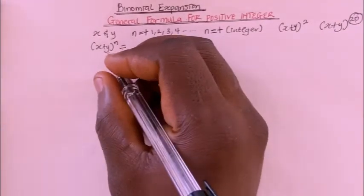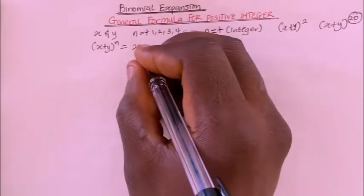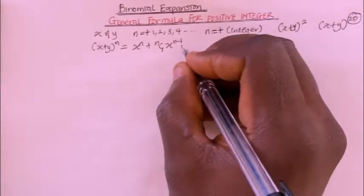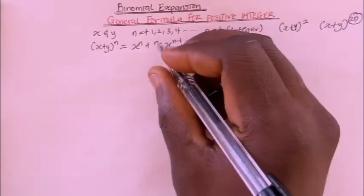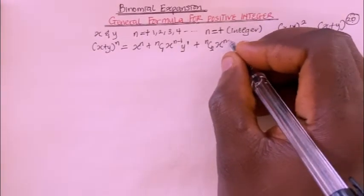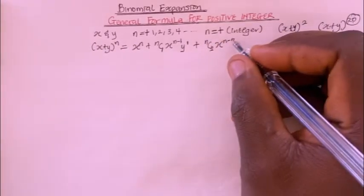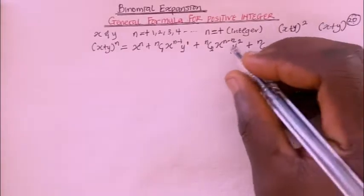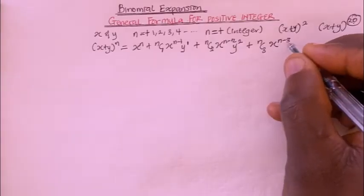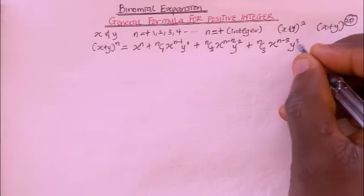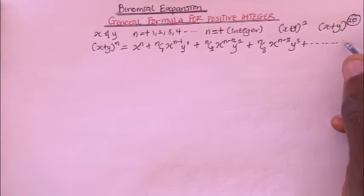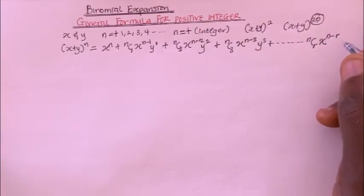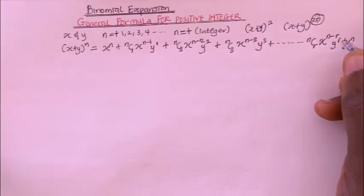Now let's go ahead and derive it. We're going to have x plus y all raised to the power of n. This equals x to the power of n, plus nC1 times x to the power of n minus 1 times y to the power of 1. Then plus nC2 times x to the power of n minus 2 times y to the power of 2. Then plus nC3 times x to the power of n minus 3 times y to the power of 3. And so on, up to nCr times x to the power of n minus r times y to the power of r, plus y to the power of n. This is the general formula.